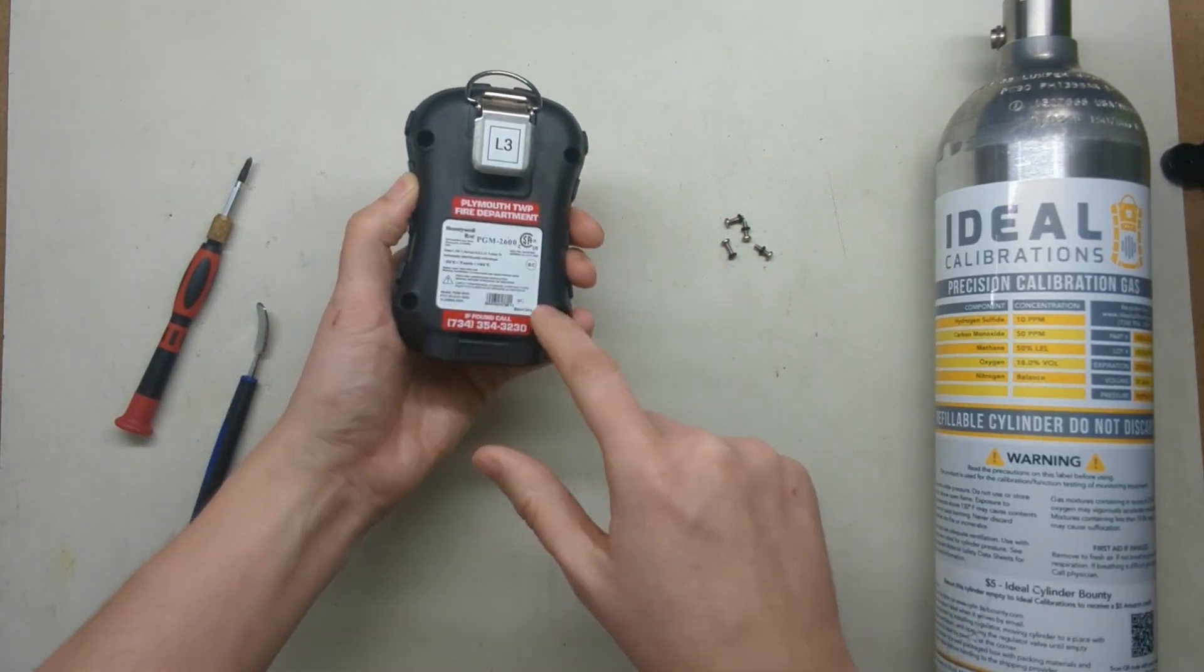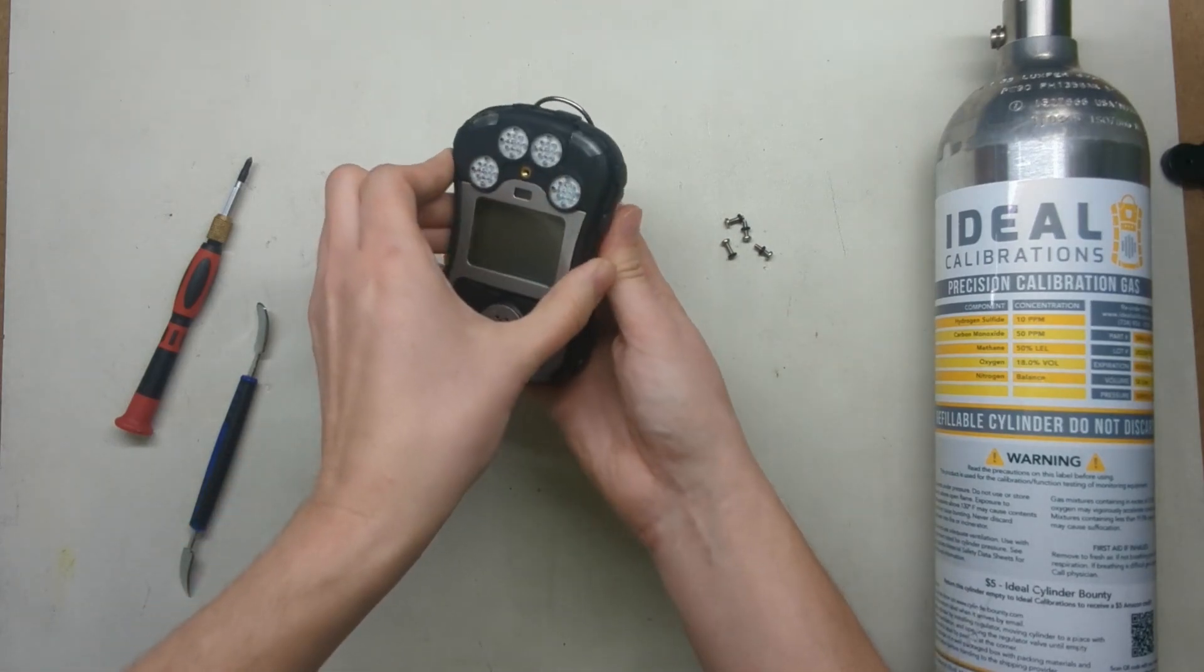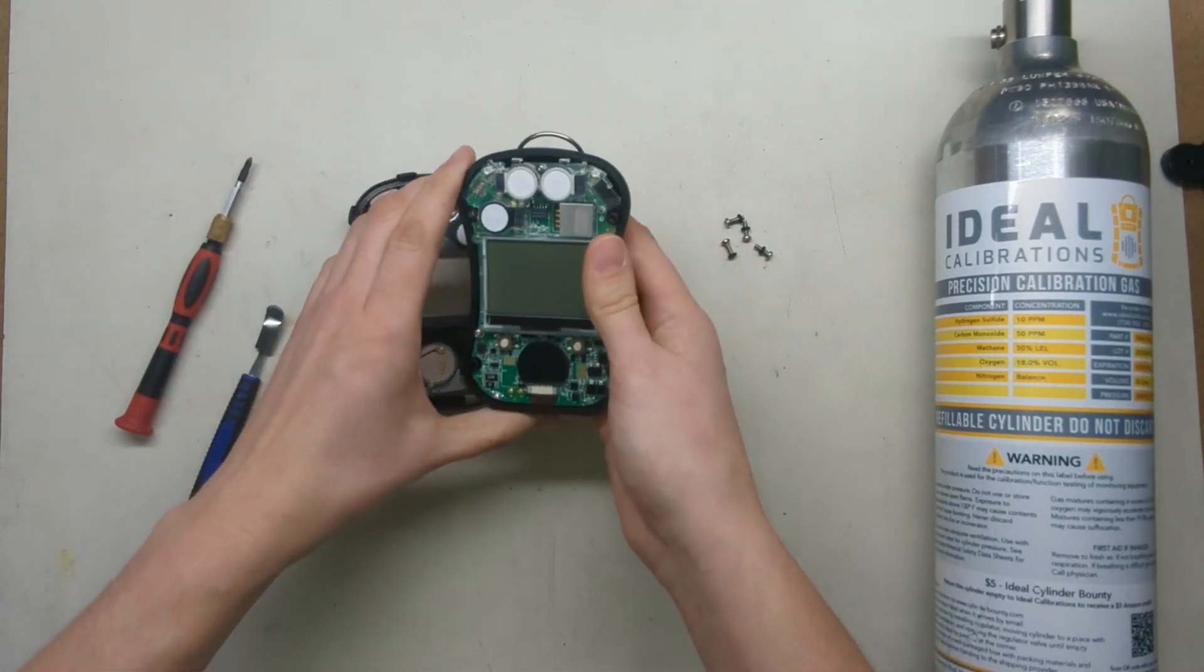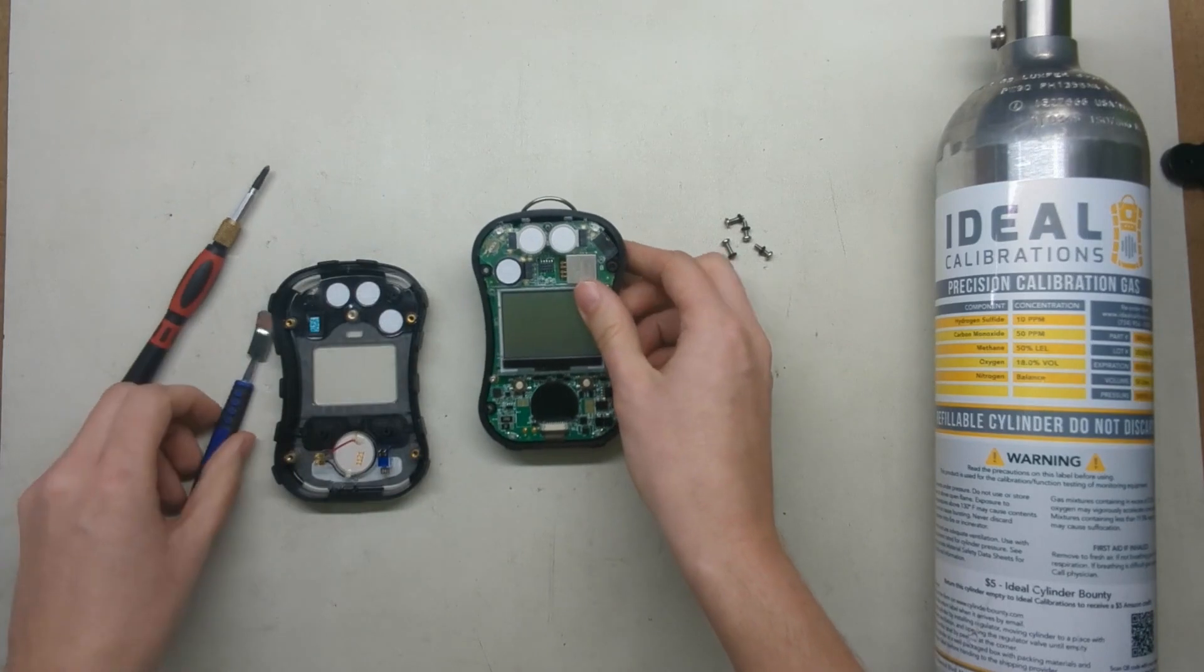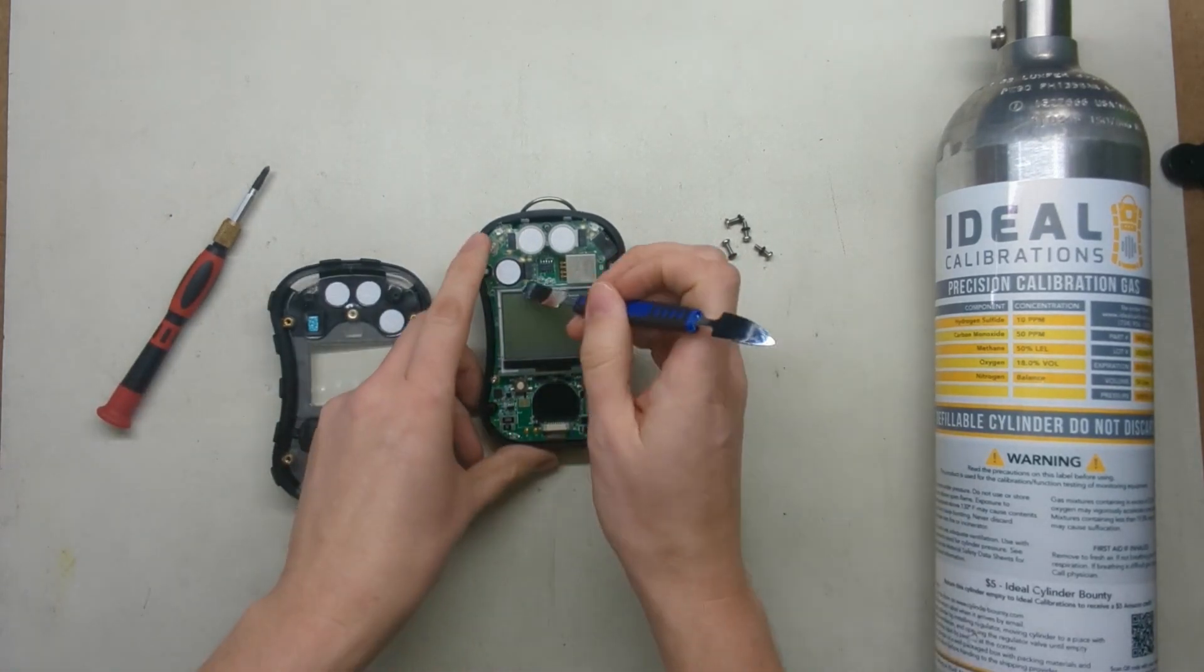There's a couple of screws in the back. I've already removed them here, so once you do you just pull it apart like that and your oxygen sensor is this one right here.